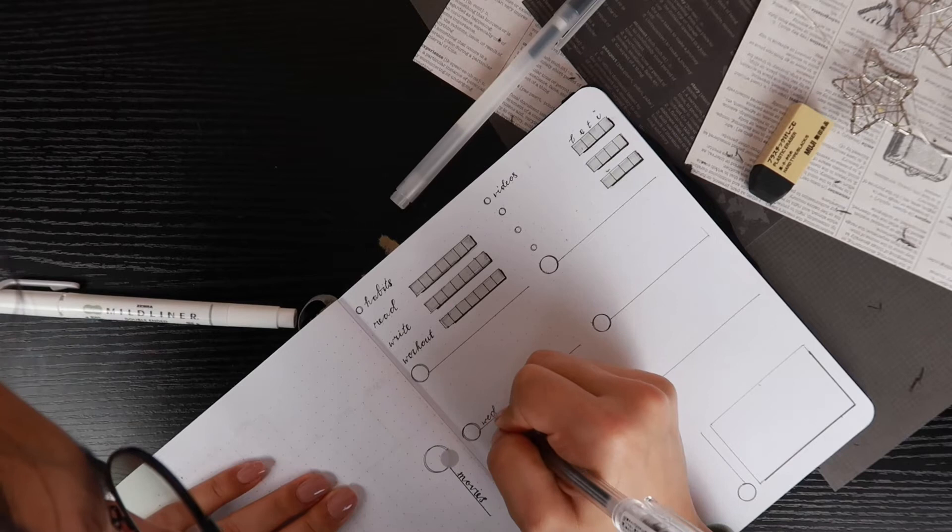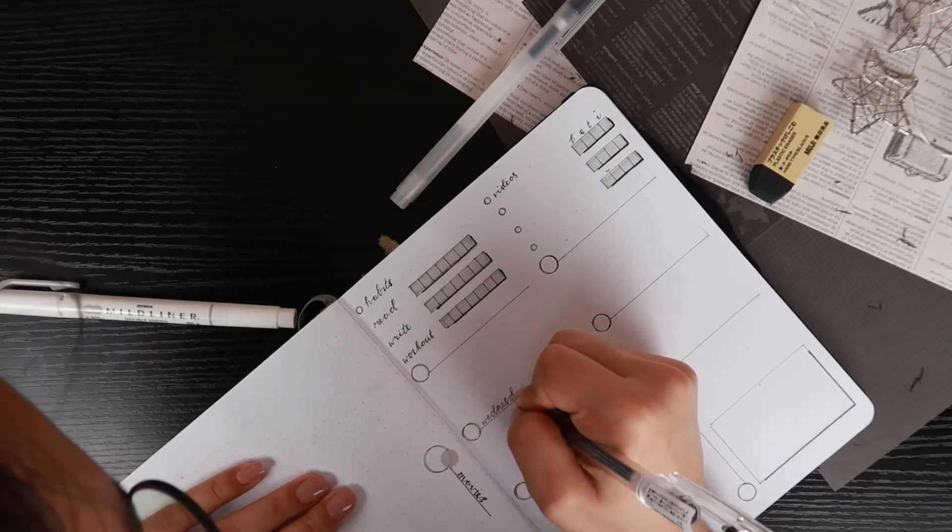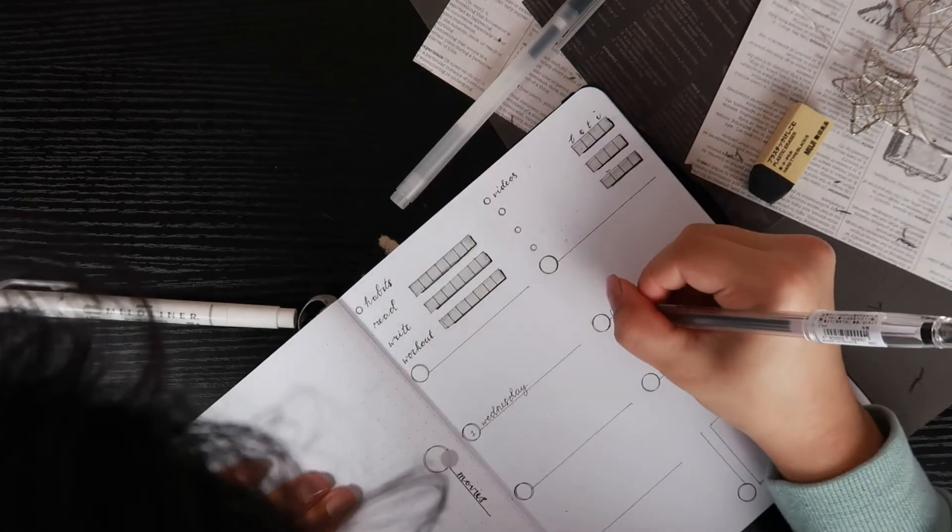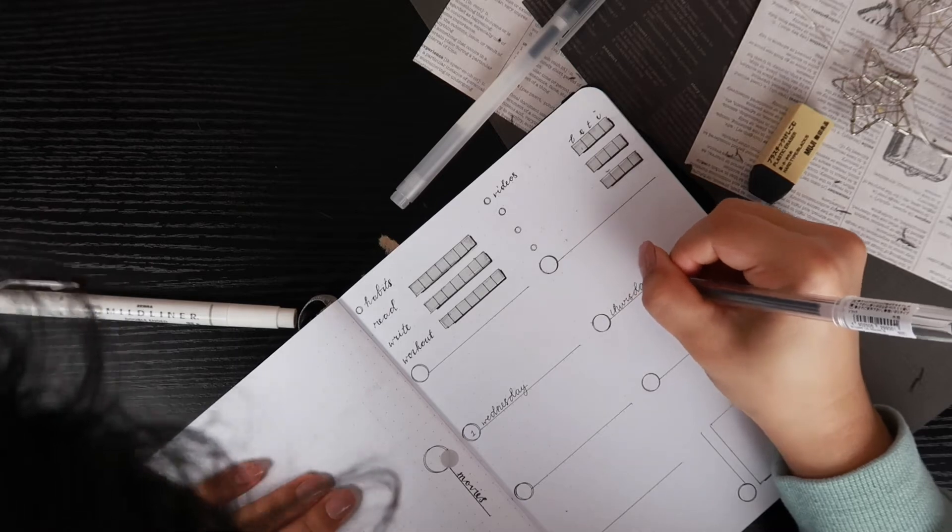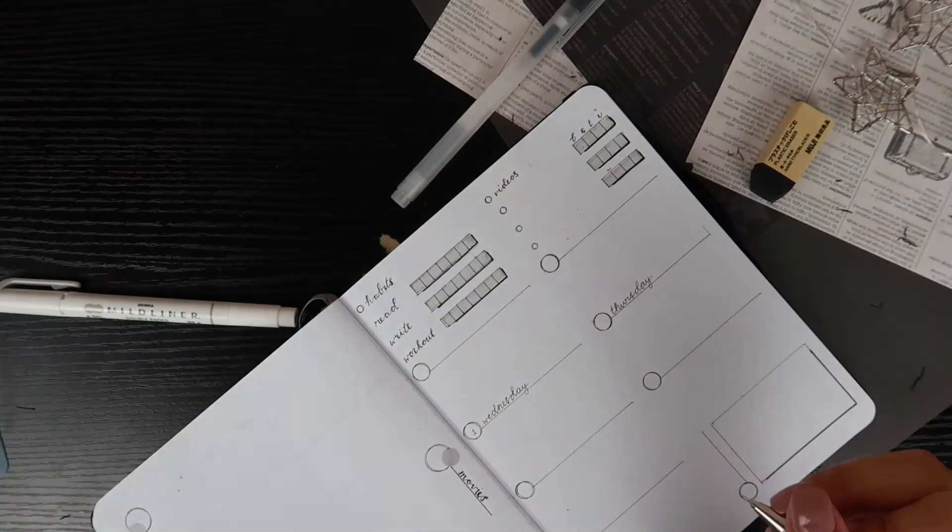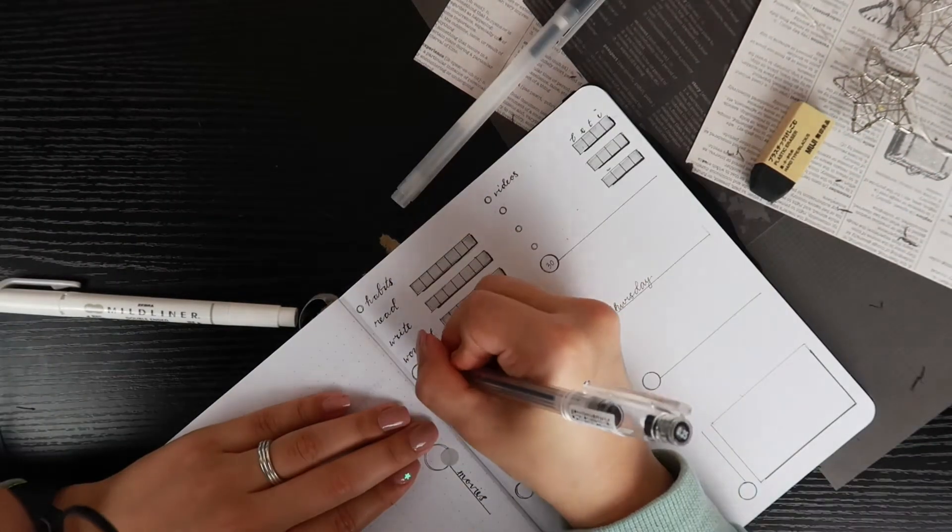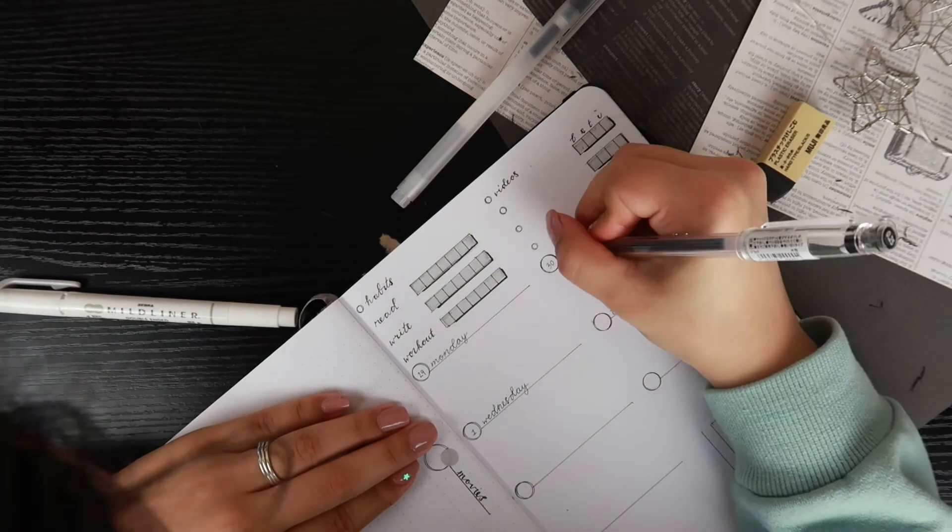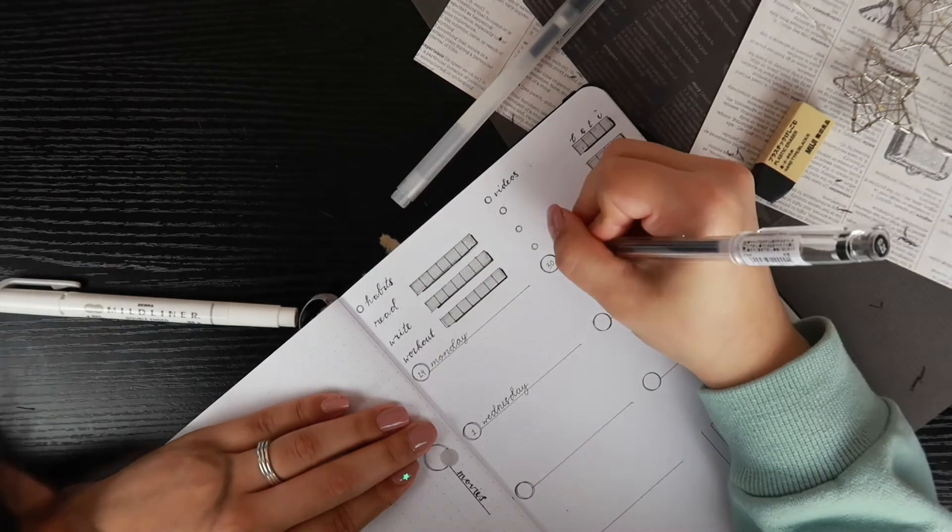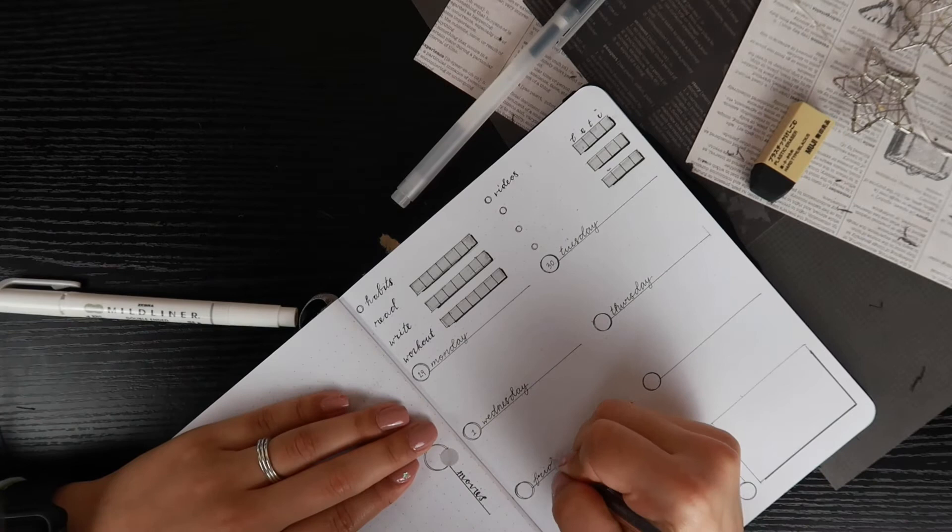Now I'm writing in the days of the week in a script font. I did include the last two days of June in the spread because I just had the space and I didn't feel like making a spread just for two days in the last month, so I included them in this month's weekly spread.